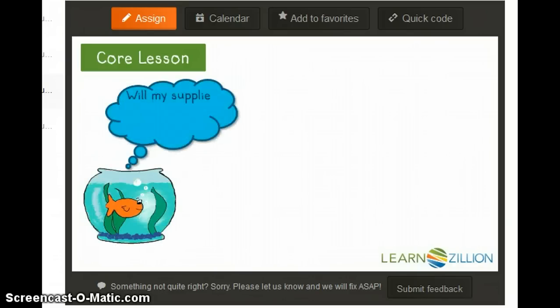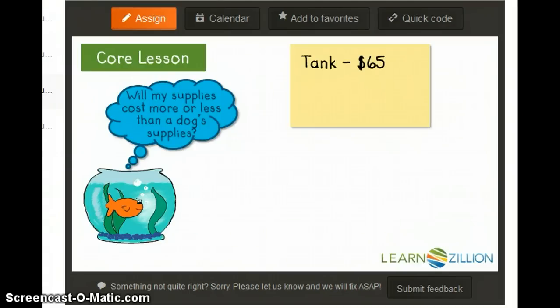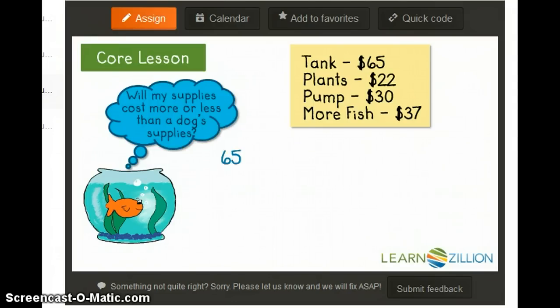Now let's see how much the supplies will cost for a fish. The tank costs $65, the plants $22, the pump is $30, and adding more fish will cost $37. I will add 65 plus 22 plus 30 plus 37 to get the total cost of the supplies.